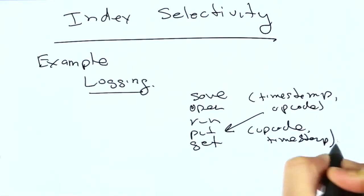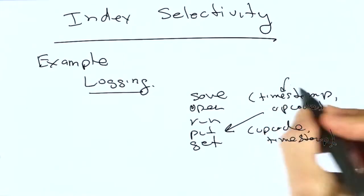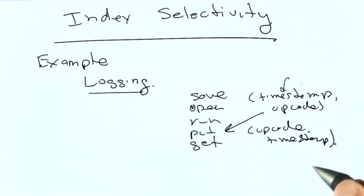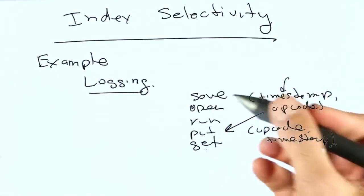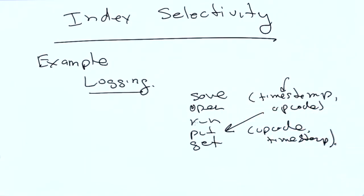Now the answer is that it would make a lot more sense to do the timestamp first. And the reason is that if you typically know the range of time that you're looking for an operation, and you specify it, and you specify an opcode, well, there's only five of these opcodes. And so by specifying one, you're only eliminating four-fifths the data. I mean, there's a tremendous amount of data that you still need to go through.